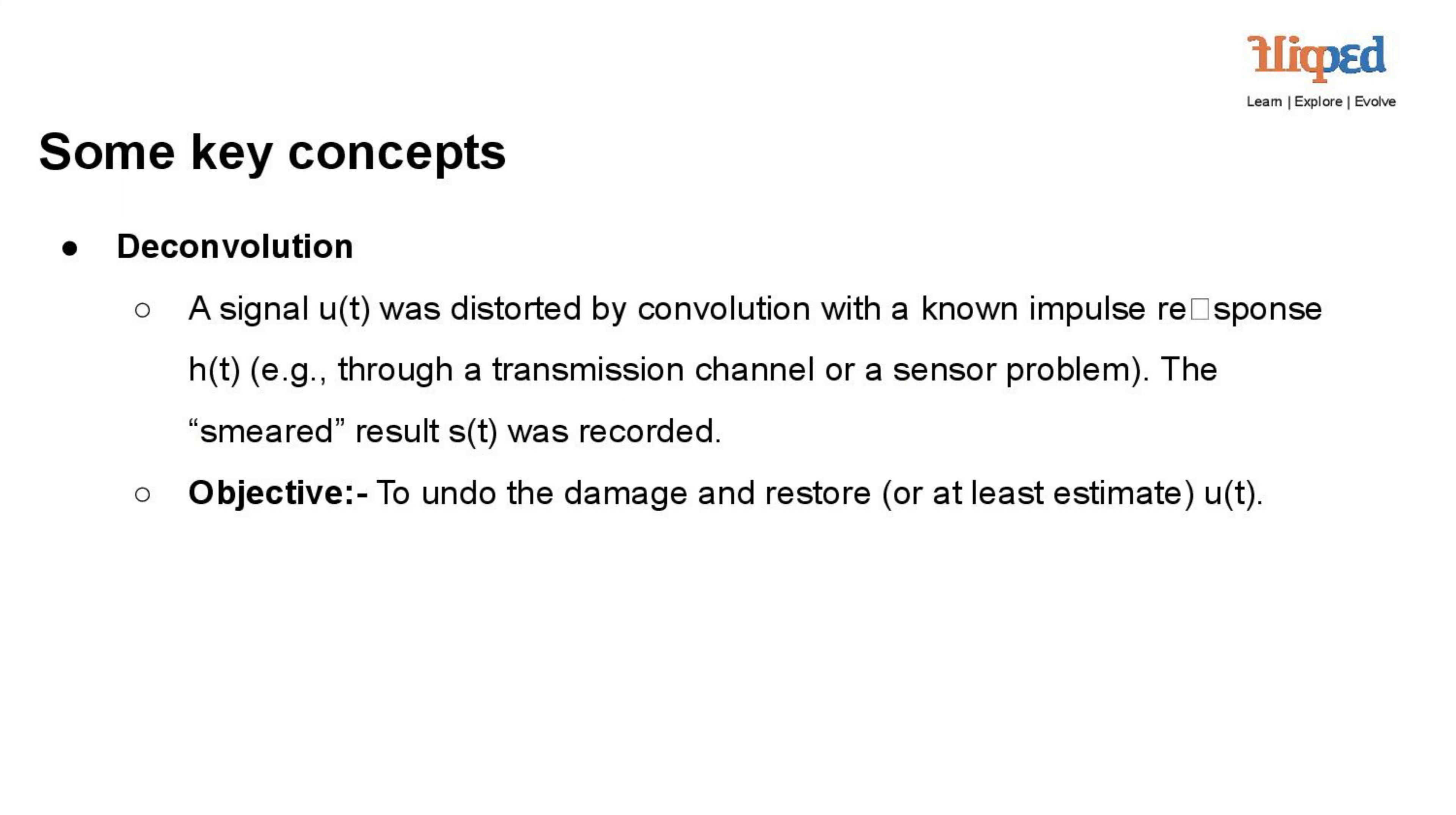Deconvolution is the process of undoing the distortion caused by convolution with the known impulse response h(t). The original signal u(t) was convolved with h(t), resulting in the recorded, smeared signal s(t). The objective of deconvolution is to recover or estimate u(t) from s(t) by attempting to reverse the convolution operation.